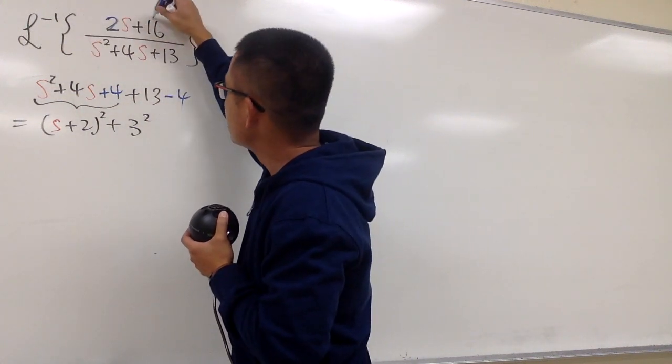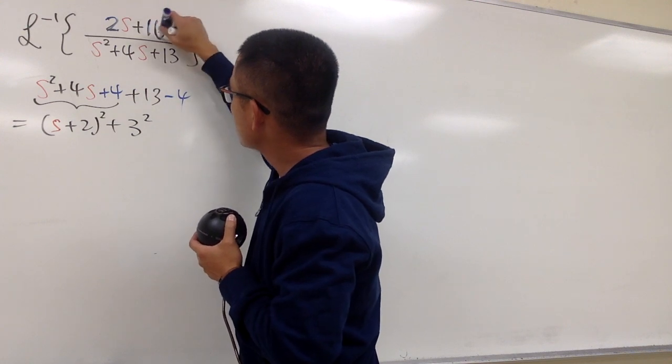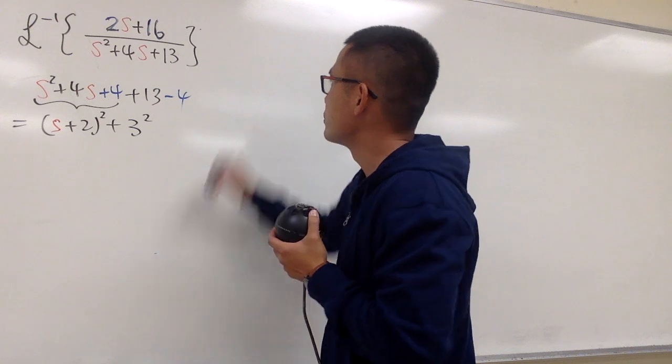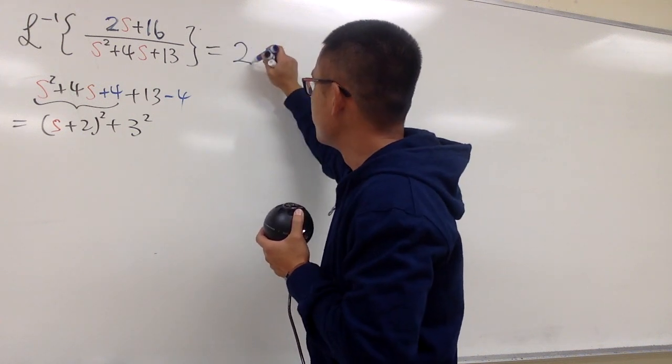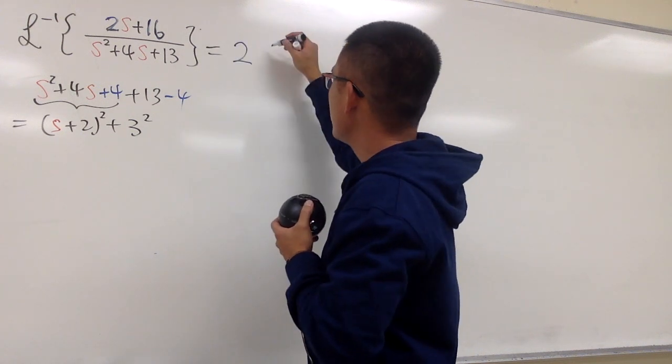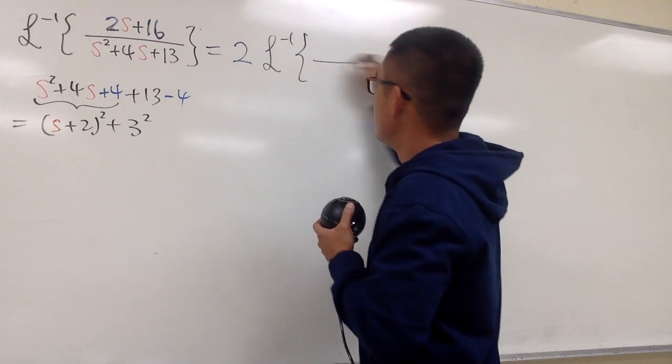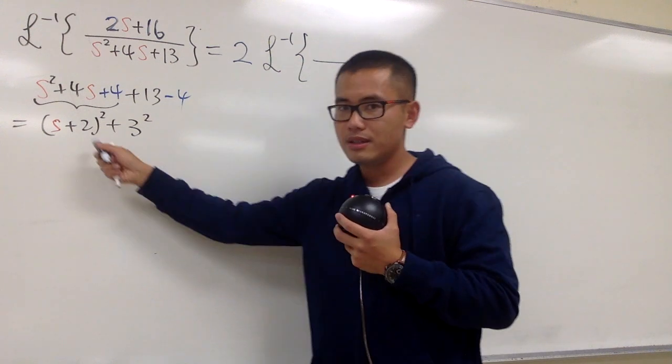We have the 2s plus 16, right? So first of all, let me factor out the 2. So we have this 2 in the front, let me just put it down right here. This 2 in blue. And then you can see this is the inverse Laplace transform. Let me write it on the bottom so we can feel better. It's this.